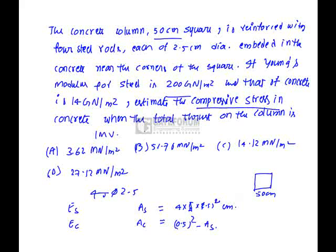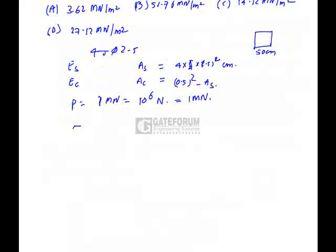We have to find out the compressive stress in concrete when the total thrust acting on the column is 1 MN. P is 1 MN, which equals 10 to the power of 6 newtons. We have to find out the compressive stress sigma equals P by A1E1 plus A2E2, which equals P 10 to the power of 6 newtons.